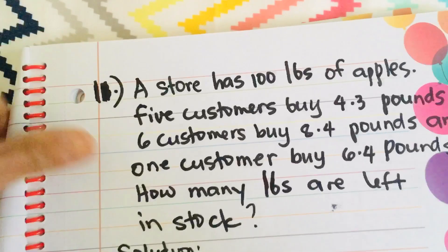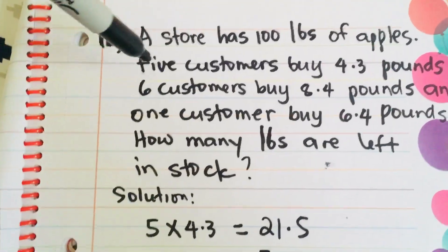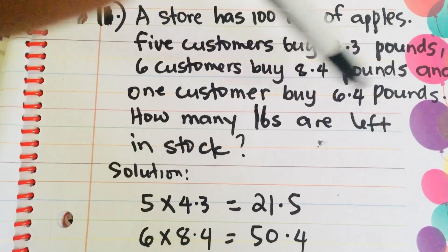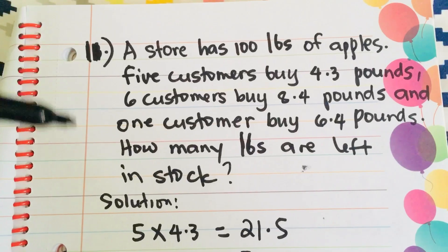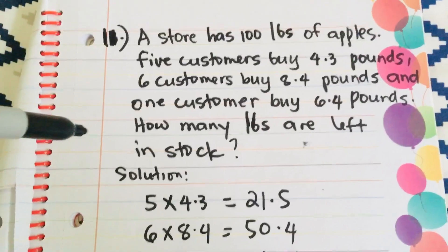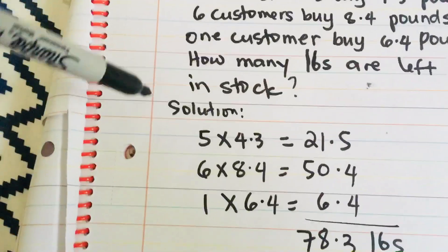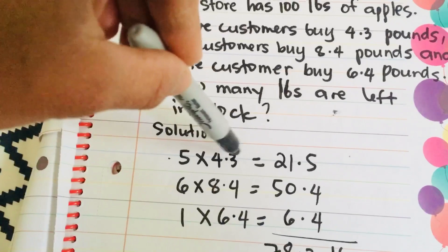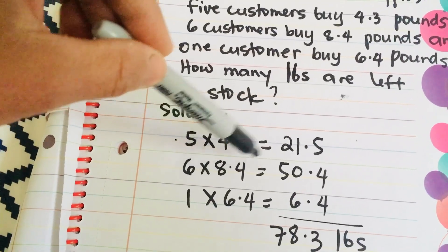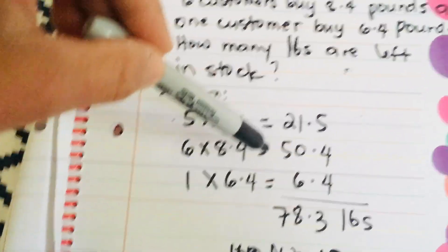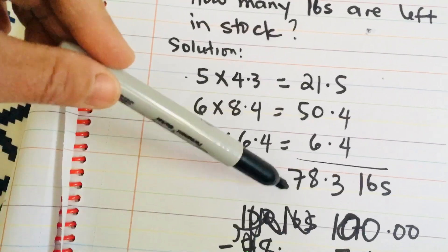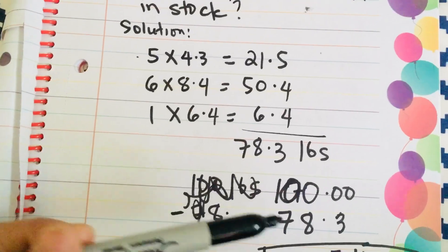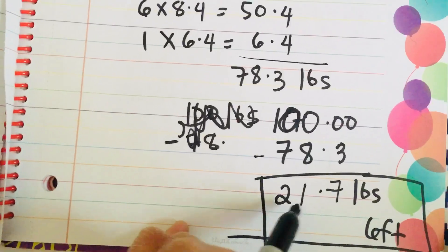Then, next, 11. A store has 100 pounds of apples. 5 customers buy 4.3 pounds, 6 customers buy 8.4 pounds, and 1 customer buy 6.4 pounds. How many pounds are left in stock? This one, this question is very important because, as far as I can remember, there is one question that was similar to this. Solution. So, 5 customers buy 4.3 pounds. 5 times 4.3 is 21.5. And, 6 times 8.4 is equal to 50.4. And then, 1 times 6.4 is equal to 6.4. So, all in all, we have 78.3 pounds. And, the question is how many pounds are left in stock? Total stock was 100 minus 78.3 equals 21.7 pounds left.